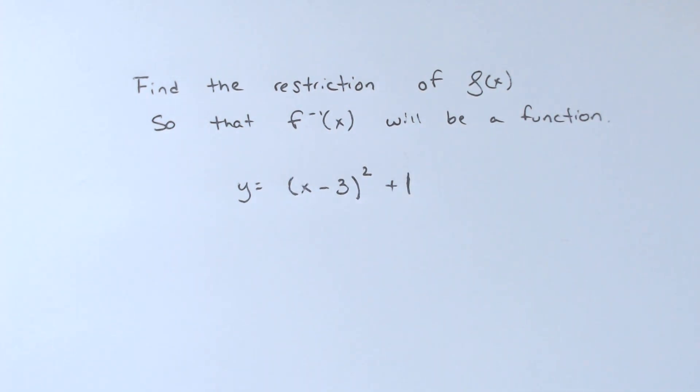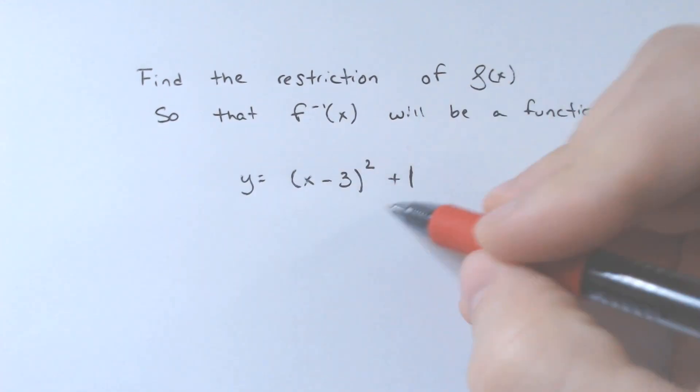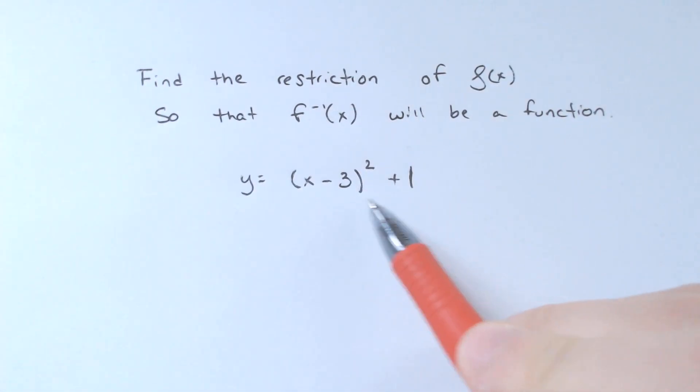So what that's referring to is going back to the horizontal line test. If you were to graph this original function x minus 3 squared plus 1, it would be to the right by 3 and up by 1, and it would be a happy-facing parabola like so.